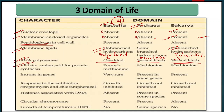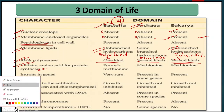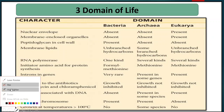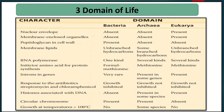Next character: initiator tRNA. In the case of Eubacteria (true bacteria), the initiator tRNA carries formyl-methionine. In Archaebacteria and Eukaryotes, the initiator tRNA carries methionine (not formylated).